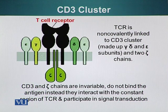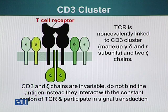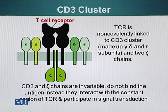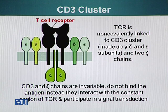There are certain proteins present around the TCR that are non-covalently linked, made up of gamma, delta, epsilon subunits and two zeta chains. CD3 and zeta chains are invariable — they do not bind antigen; instead they interact with the constant region of the TCR and participate in signal transduction. Once the TCR recognizes an antigen in association with an MHC molecule, a conformational change occurs which is read by the CD3 cluster composed of gamma, delta, and epsilon subunits and associated zeta chains.